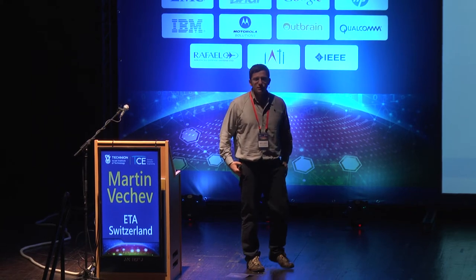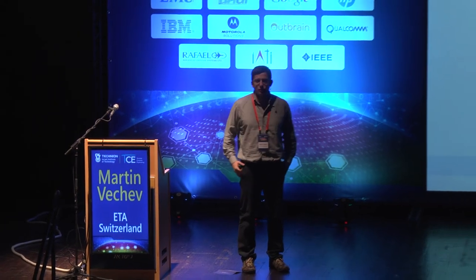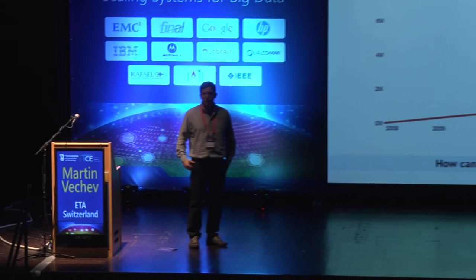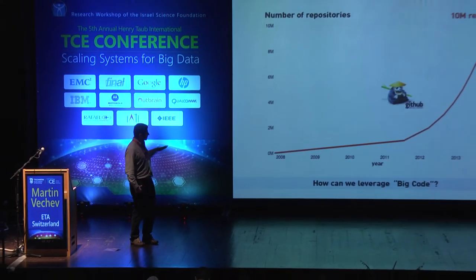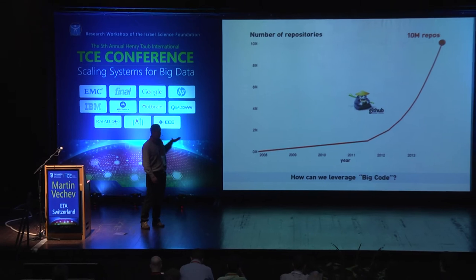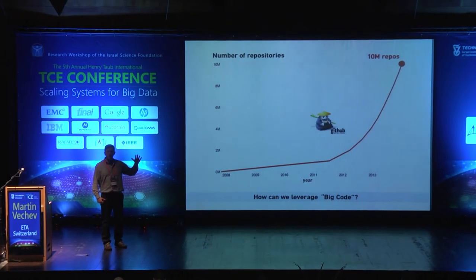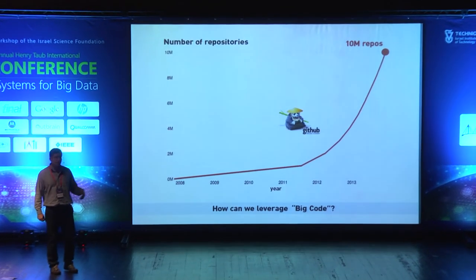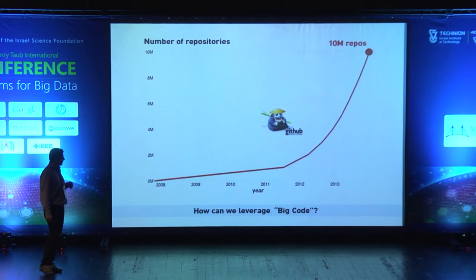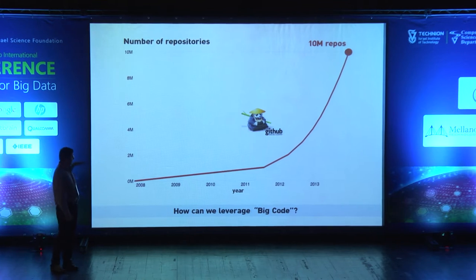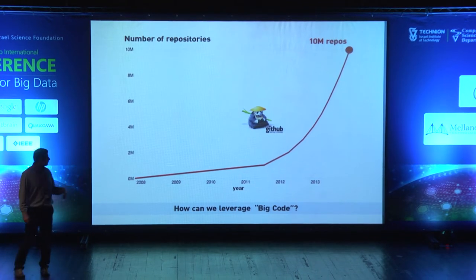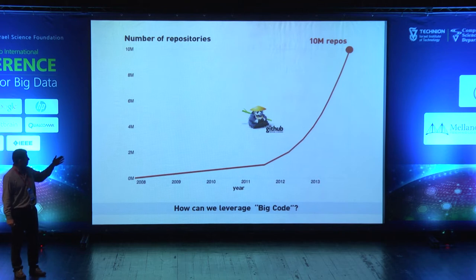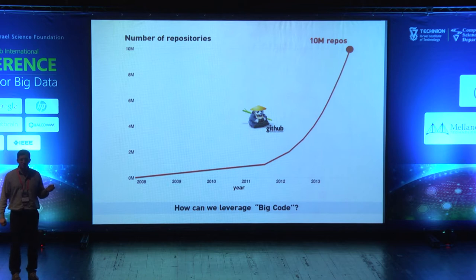One of the primary motivations for the work that we've been doing in the last 3-4 years is this increased availability of high-quality, freely available programs out there on the web, typically found in repositories such as GitHub, Bitbucket, and others. Here is the graph in the number of repositories of GitHub in the last 3-4 years. Around the end of last year, 2014, there were about 10 million repositories. Currently there are about 20 million repositories.